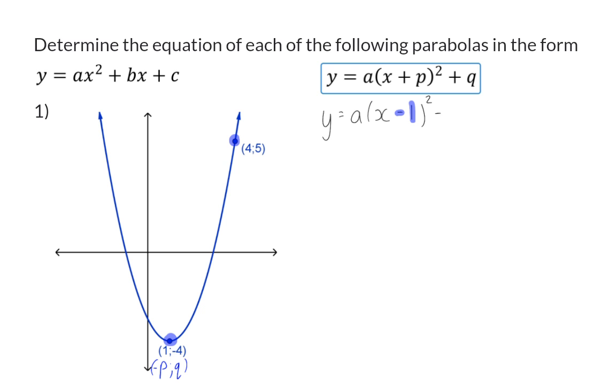And the q value stays as it is. Here we now have y, a, and x as variables, but we are also given an extra coordinate on the graph. So we can use that and substitute x with 4 and y with 5 in our equation. After this, we will be able to solve a.